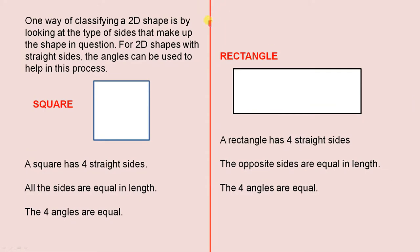One way of classifying a 2D shape is by looking at the type of sides that make up the shape in question. For 2D shapes with straight sides, the angles can be used to help in this process.